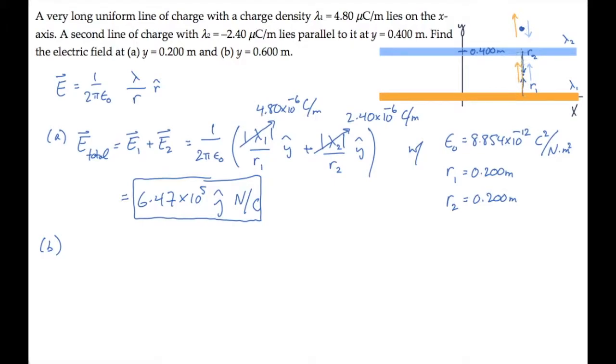I'll draw the r vectors here. The one from the orange charge, I'll draw in orange. That'll have a length of 0.6 meters. And the one from the blue line of charge is here. That'll have a distance of 0.2 meters.